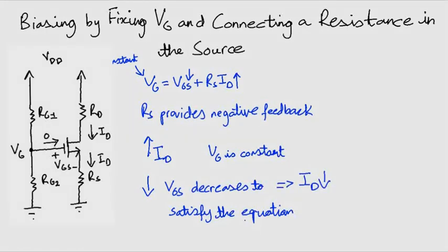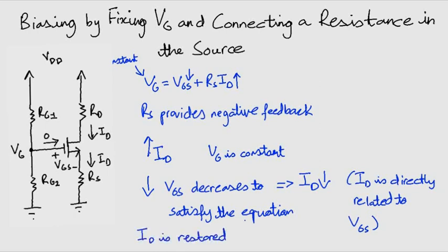This decrease in VGS in turn results in a decrease in ID. Why? Because ID is dependent upon VGS. So the resistance RS restores ID, and hence our operating point is preserved.